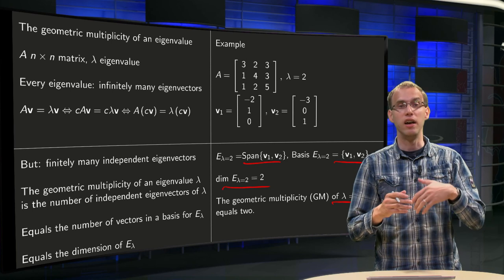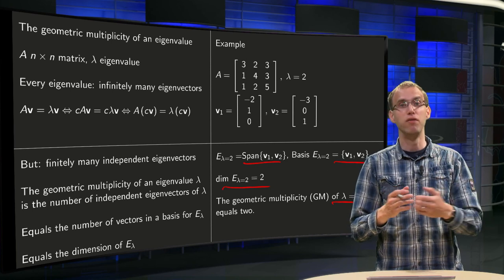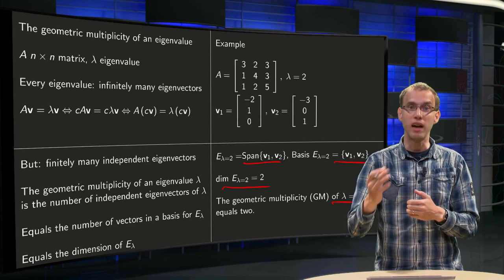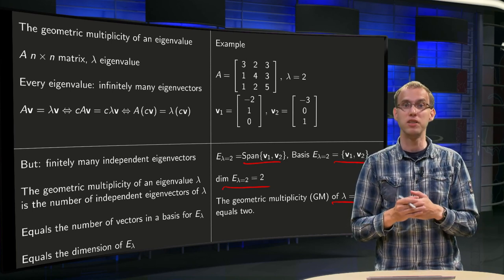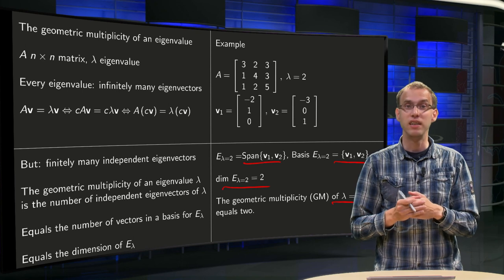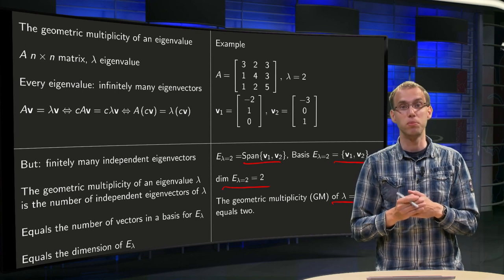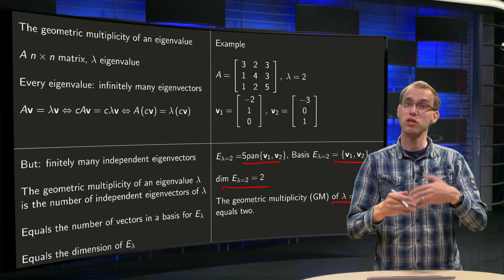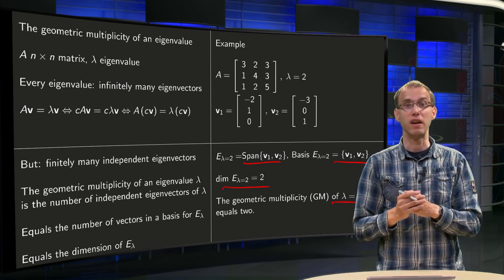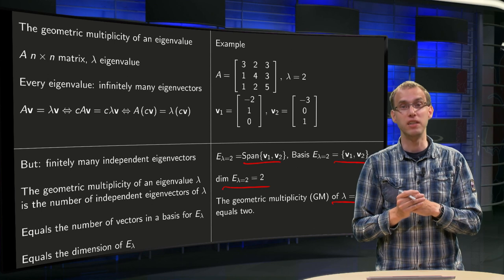As you see, if you have learned to compute eigenvalues and eigenspaces, finding the geometric multiplicity is not difficult at all — it is simply the number of vectors in a basis for the eigenspace.